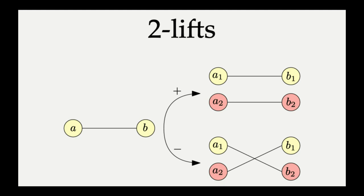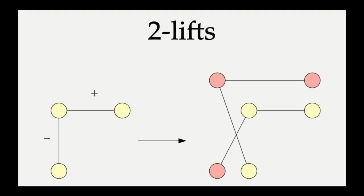And as you can see in this picture, there's a total of 2 possible ways to lift an edge. You start by duplicating a, you get a₁ and a₂, then you duplicate b, you get b₁ and b₂. And there's 2 possible ways we can do this. There's a plus lift, which places 2 parallel edges between the duplicate copies—namely a₁b₁ and a₂b₂. And then there is the minus lift, which places 2 crossing edges. Namely, you have an edge going from a₁ to b₂ and an edge going from a₂ to b₁.